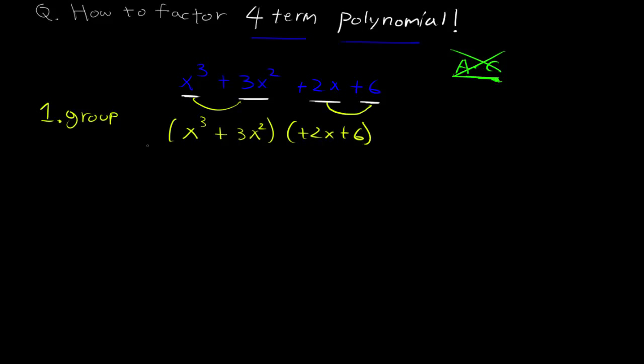From here, the second step we have to do is factor out a common factor. In these two here, you can see that there's two x's that I can pull out from each of these.